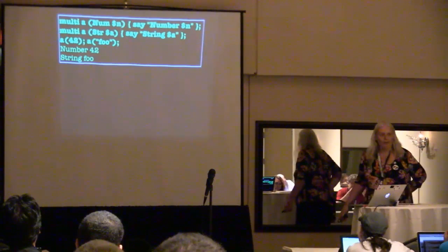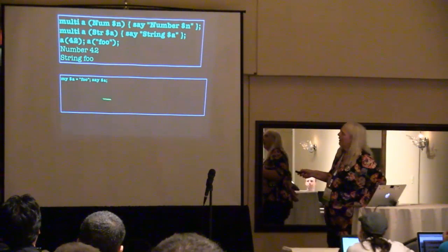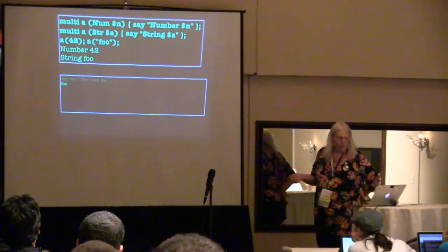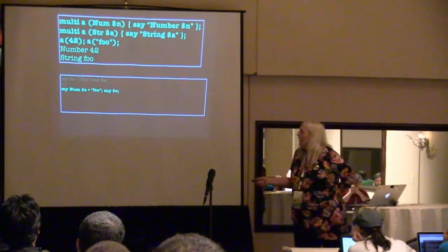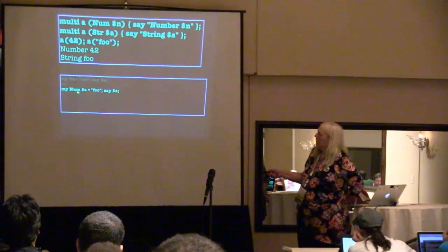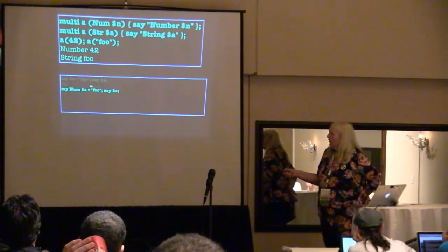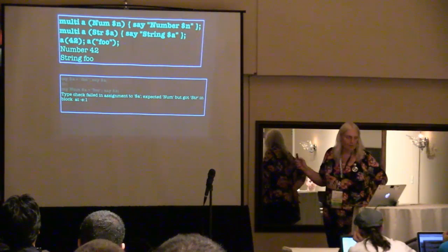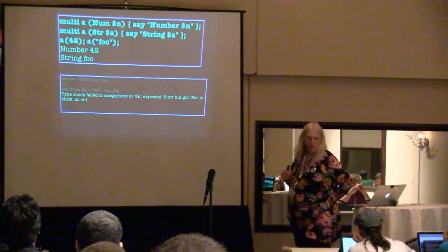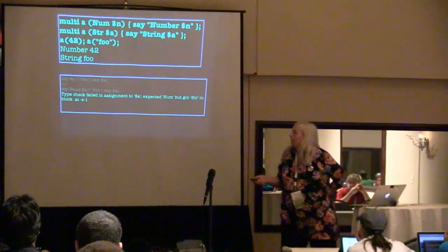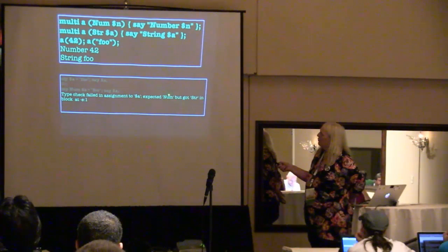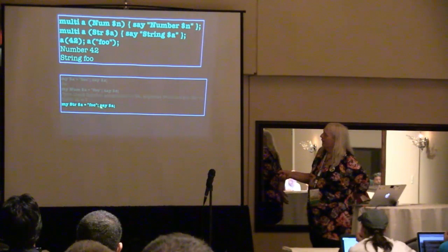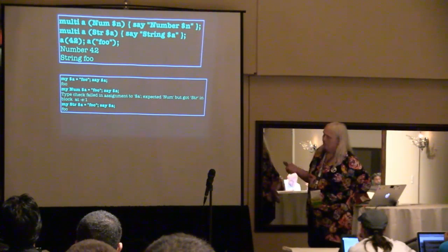So what is this typing? If you put a string into a variable and say it, it will just say 'foo' — it works. However, if you say this variable is a number and you try to put a string in it, it will actually say type check failed. You can't put a string into a number — expected number but got string. So if you mark it as a string and put a string in it, it just works again.